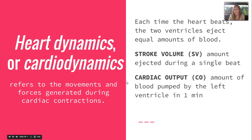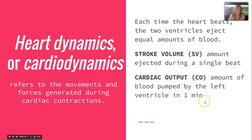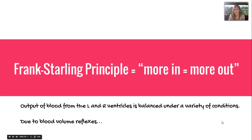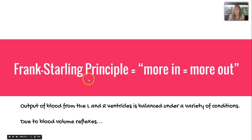Cardiac dynamics refers to the movements and forces generated during cardiac contractions. Each time the heart beats, both ventricles eject equal amounts of blood. The stroke volume (SV) is the amount ejected during a single beat, which can vary per individual. Cardiac output is the amount of blood pumped by the left ventricle in one minute — physicians focus on this because it indicates adequate blood flow; without it, homeostasis cannot be maintained. The Frank-Starling principle states that the more blood pumped in, the more blood pumped out, balancing output under a variety of conditions.